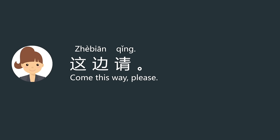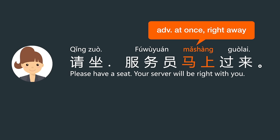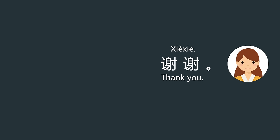这边请 — this way, please. 请坐 — please have a seat. 服务员马上过来 — 马上 means 'at once' or 'right away,' so this means the server will be right with you. 谢谢.